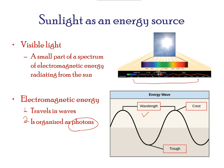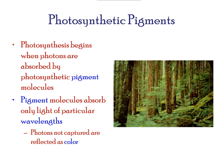Photosynthesis takes place in the chlorophyll pigments which are present in chloroplasts. These pigments absorb the packets of photons of solar energy. Photons not captured result in the color green.